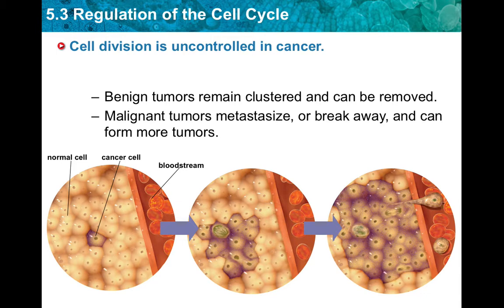Cell division is uncontrolled in cancer. Cancer is the common name for a class of diseases characterized by uncontrolled cell division. It arises when the regulation of the cell cycle breaks down, so basically cancer cells just keep on dividing no matter what.